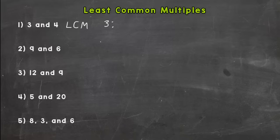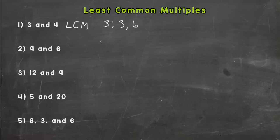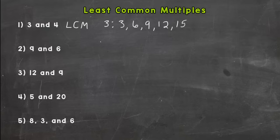Think of three's multiplication facts: three times one is three, three times two is six, three times three is nine, three times four is twelve. An easy way to do this, rather than thinking of them as multiplication facts, is to just count up by three: three, six, nine, twelve, fifteen. That list will go on forever — it's infinite — but there's no reason to continue past five or six multiples.